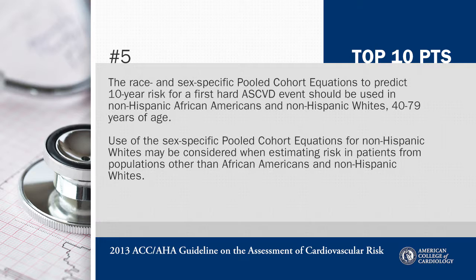Point five: the race and sex-specific pooled cohort equations to predict 10-year risk of a first hard cardiovascular event should be used in non-Hispanic African Americans and non-Hispanic whites, ages 40 to 79. Use of sex-specific pooled cohort equations for non-Hispanic whites may be considered when estimating risks in other patient populations.